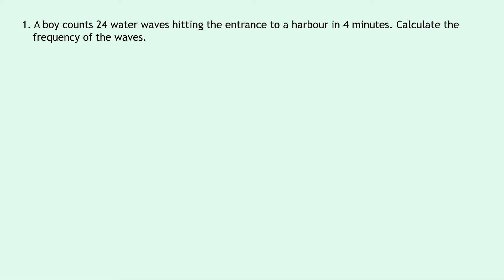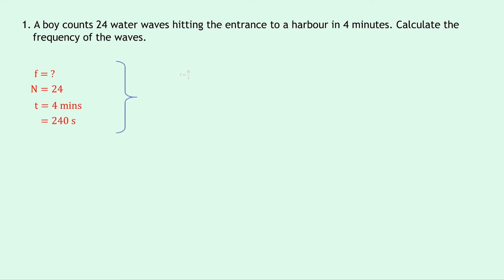So we need to write down what we know from the question. We're trying to find the frequency, we know the number of waves is 24 with no units, and the time is 4 minutes. But remember we don't use minutes in physics calculations, we need to convert to seconds. So if we do 4 times 60 we get 240 seconds. Writing down the equation relating these variables we get F equals N over T. Substituting in the numbers, we have 24 divided by 240, which gives 0.1 hertz.